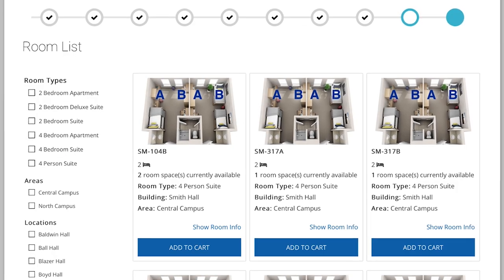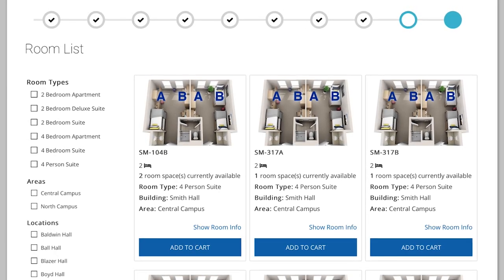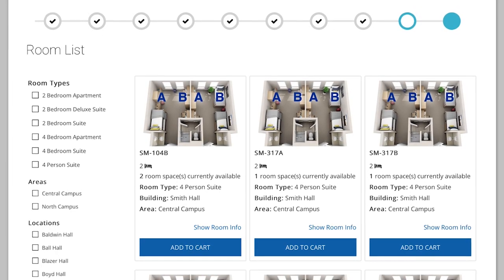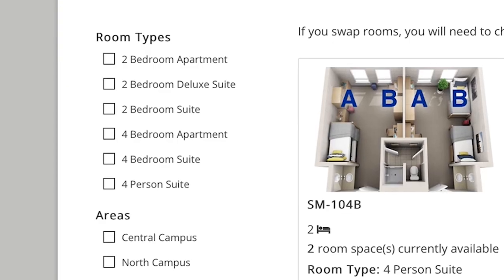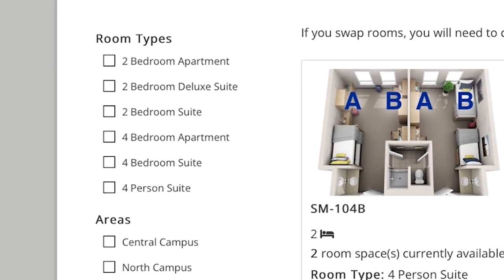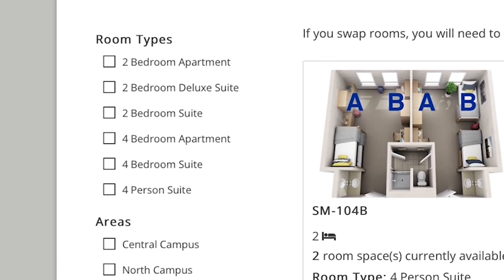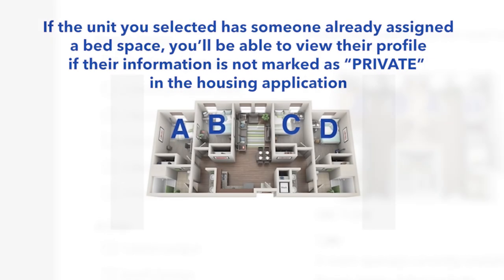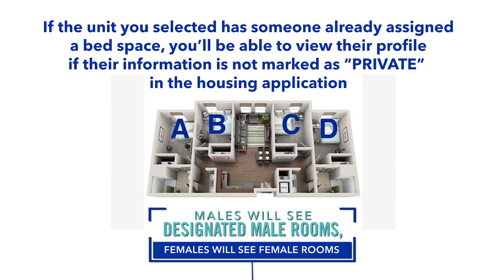Depending on which building you choose, you will see either a list of floors or a list of suites. Select either the floor or suite that you are interested in. Next, you will select your bed space. Depending on the room type, beds are labeled A through D. These letters indicate the bed space location starting from the left side of the room and working through the alphabet as you move to the right side of the room.